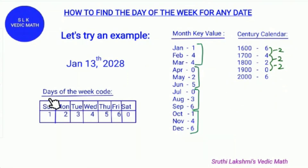Let's see the days of the week code. Sunday is 1, Monday is 2, Tuesday is 3, Wednesday is 4, Thursday is 5, Friday is 6, and Saturday is 0.